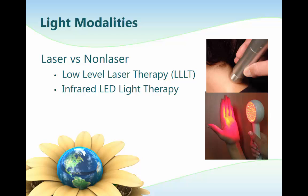Electromagnetic energy is the most abundant form of energy in the universe. Light is a form of electromagnetic energy with three general classifications: ultraviolet, visible, and infrared. Energy having a wavelength greater than 780 nanometers is considered infrared energy. The ultraviolet spectrum is located below the range of visible light, below 380 nanometers.